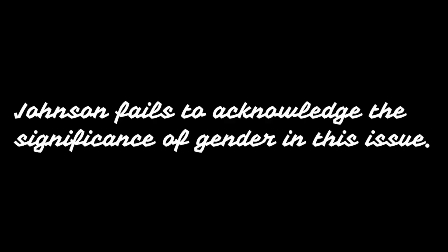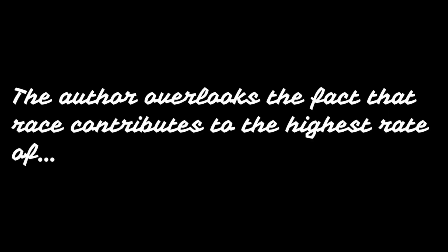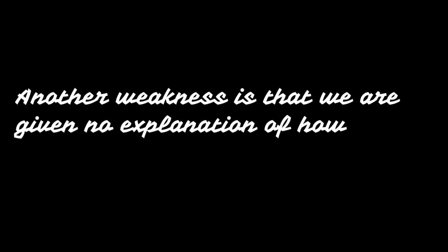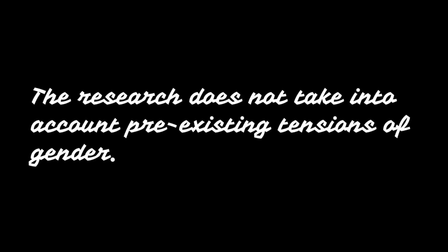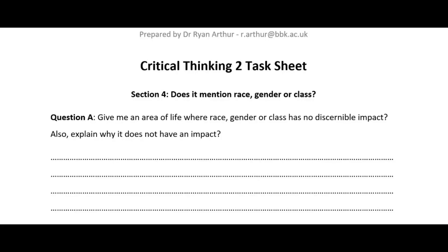Here are some examples of this critical question in practice: 'Johnson fails to acknowledge the significance of gender in this issue.' 'The author overlooks the fact that race contributes to the highest rate of...' 'Another weakness is that we are given no explanation of how social deprivation impacts...' 'The research does not take into account pre-existing tensions of gender.' Please refer to the Critical Thinking 2 task sheet, go to section 4: does it mention race, gender or class?